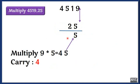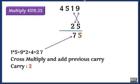The next step is a double multiplication. We are going to perform a cross multiplication: 1 into 5 and 9 into 2. Then I am going to add the previous carry, which is 4. The result is 27. 7 is written here and then 2.